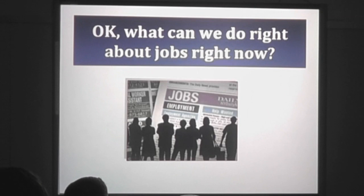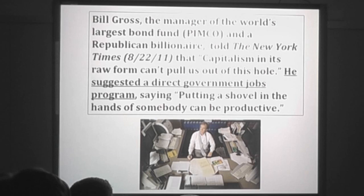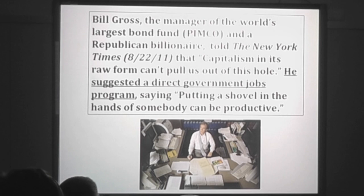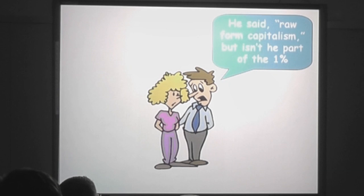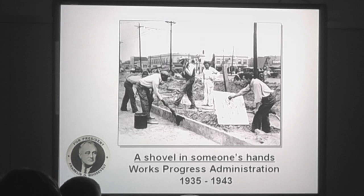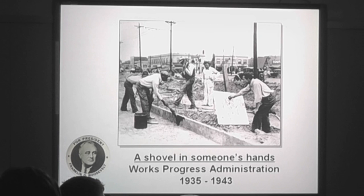What do we need to be talking about right now for jobs? The best advice: the manager of the world's largest bond fund, a Republican billionaire, says capitalism in its raw form can't pull us out of this hole. He suggested a direct government jobs program — putting a shovel in the hands of somebody can be productive. What did he mean? The New Deal Works Progress Administration created jobs for literally millions of people in the 1930s, not by stimulating the economy indirectly, but by hiring people. The only way you create a job is you hire somebody.